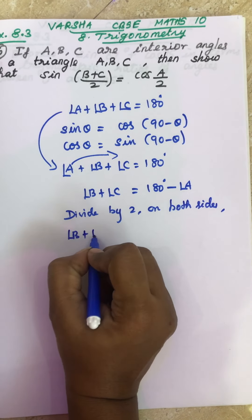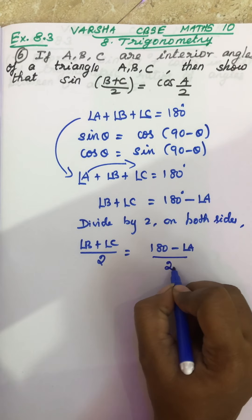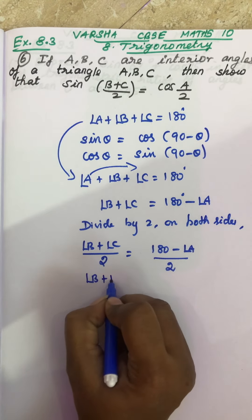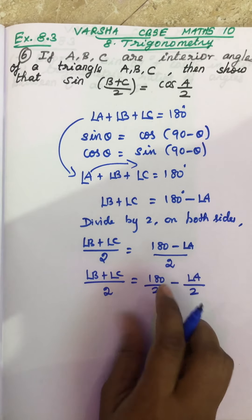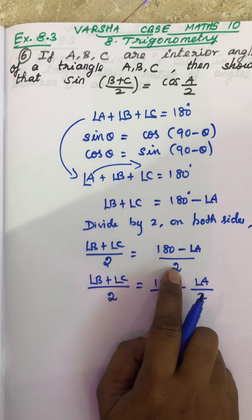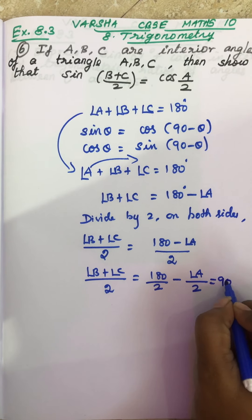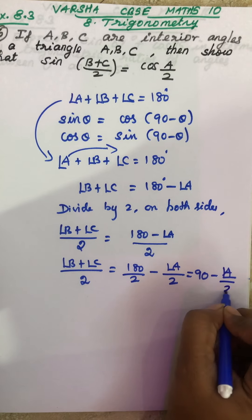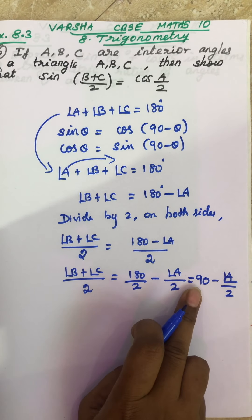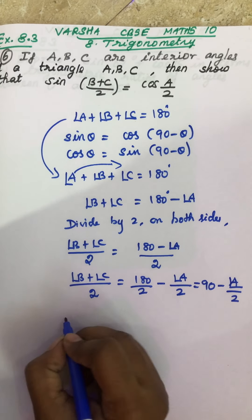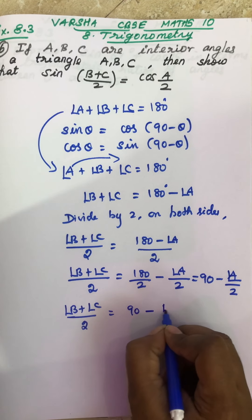Dividing by 2 on both sides gives (B+C)/2 = 180/2 − A/2. Since 180 divided by 2 is 90, this becomes (B+C)/2 = 90° − A/2. The 2 cancels with 180, leaving only A divided by 2.